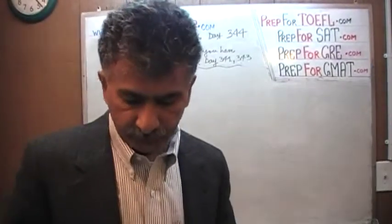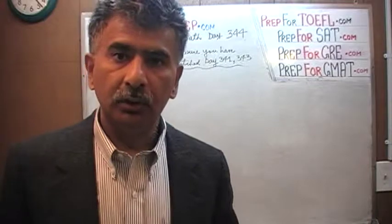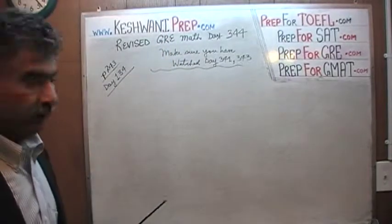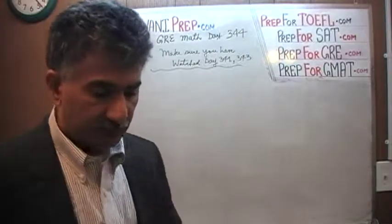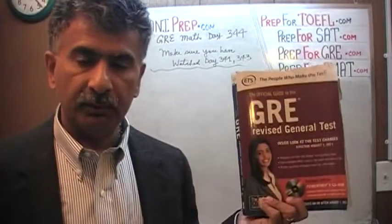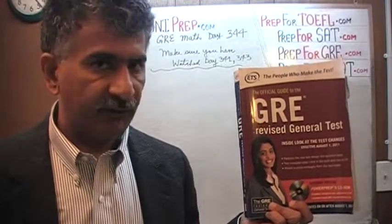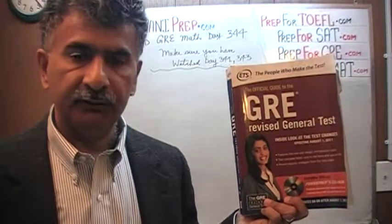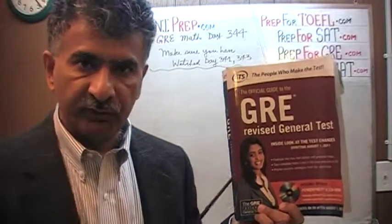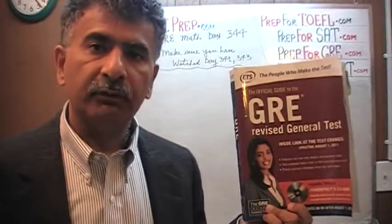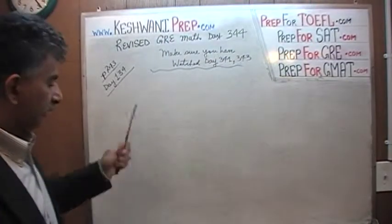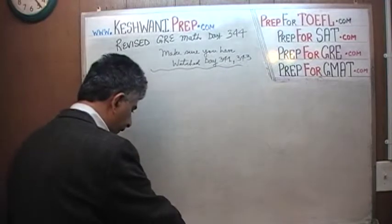The problem that we are about to solve is the one you will find on page number 243. Please turn to it. Today is our lesson number 344. This problem on page 243 is the exact same problem that appeared in the first edition of the revised GRE. We have already solved every single problem from this book. If you are interested in watching the original solution, you will find it on day number 134.